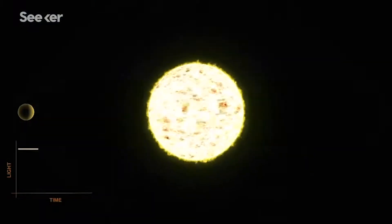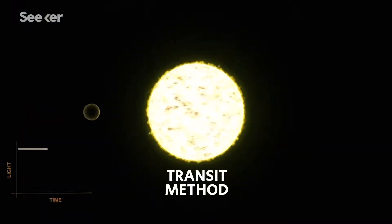This is the same problem astronomers have when trying to image exoplanets. Currently, astronomers detect exoplanets indirectly using a shadow technique called the transit method.